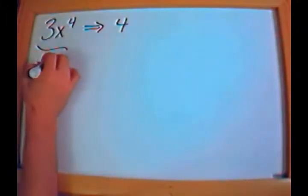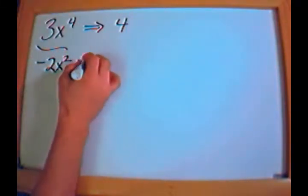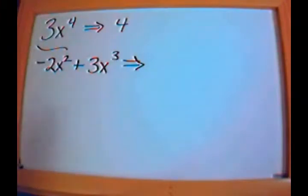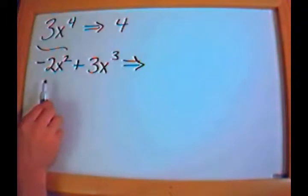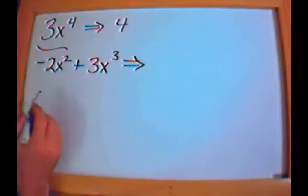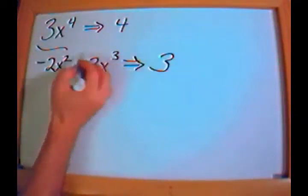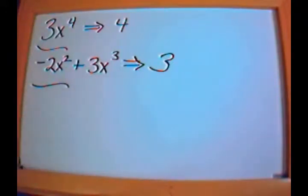Let's take another example: minus 2x squared plus 3x to the 3rd. What is the degree of that polynomial? This is also a binomial because I have two terms, one involving x squared and one involving x to the 3rd. The degree is the highest numbered exponent, which is 3. So this is a 3rd degree polynomial.